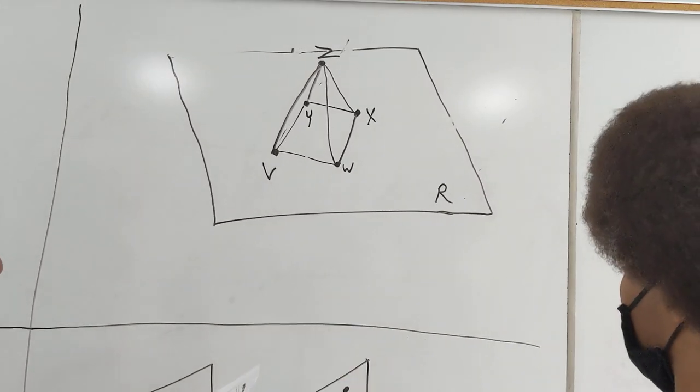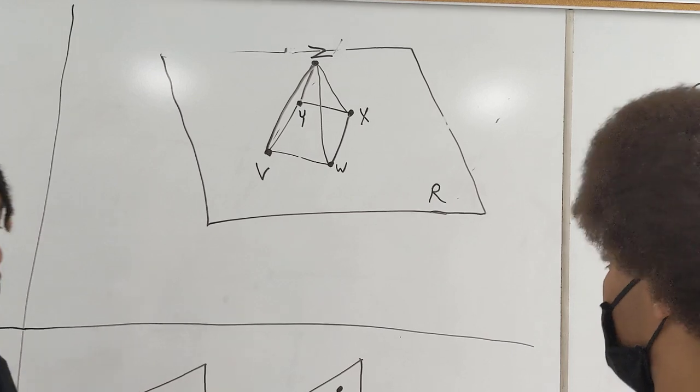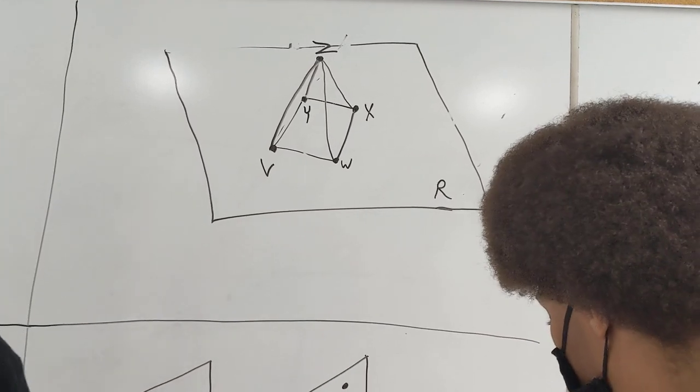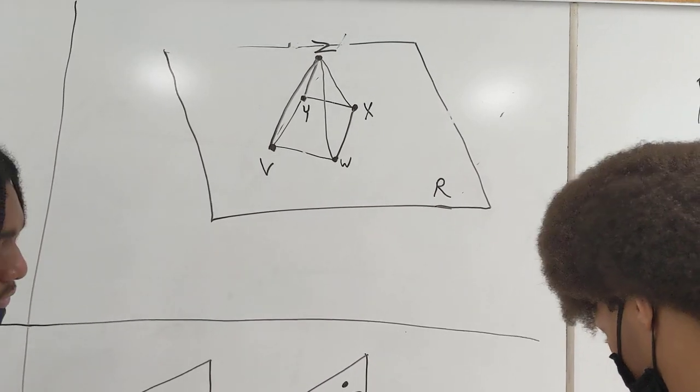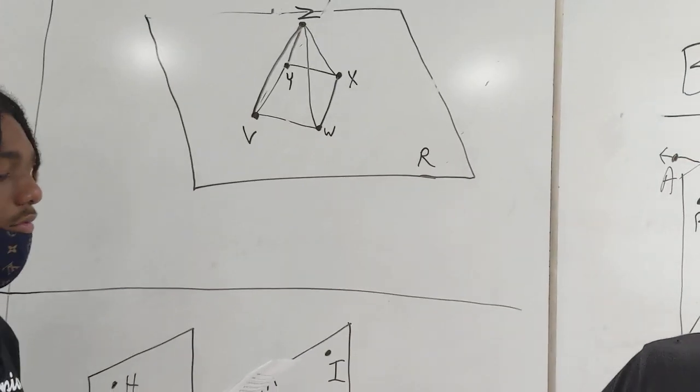And what's another one? Do you know another name? Plane R. It could be plane R, and we also have one on the back side there with the X, Y, Z, right? All right, very good.